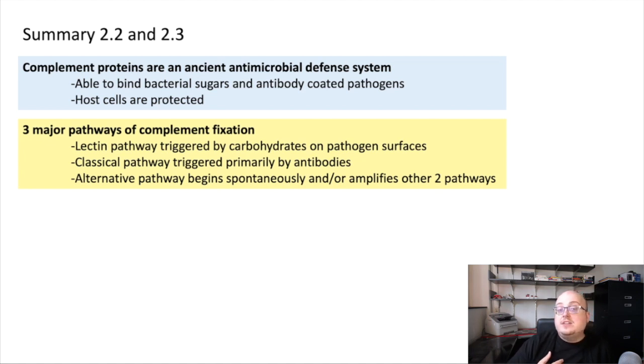There are three major pathways by which the complement process gets started. The lectin pathway is triggered by carbohydrates on pathogenic surfaces. The classical pathway is primarily triggered by antibodies, so remember C1 binds to antibodies. And the alternative pathway can either begin spontaneously, or it can sort of amplify the other two pathways by starting at the step of C3B deposition on the cell surface.